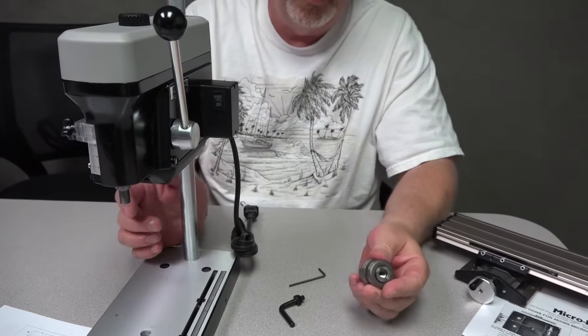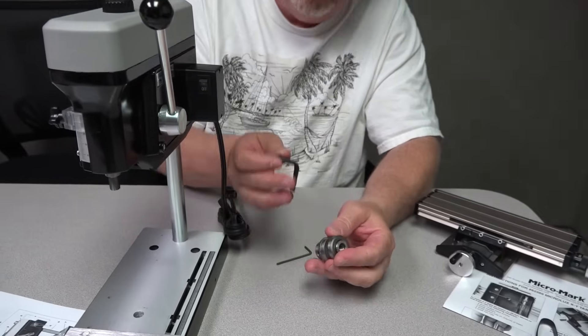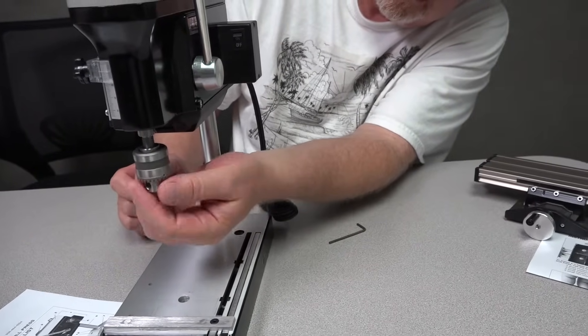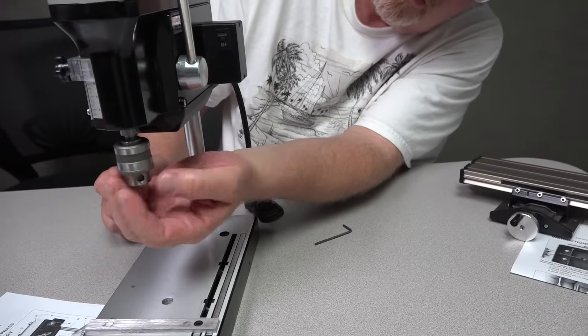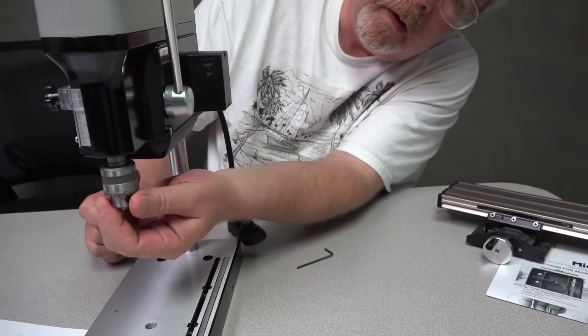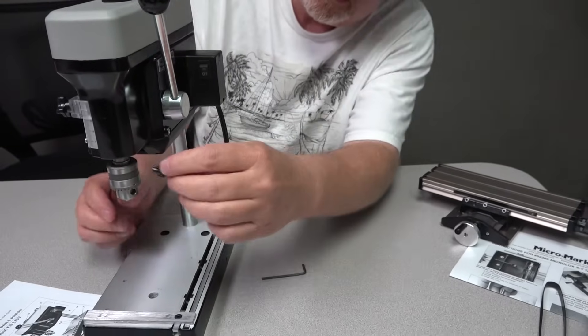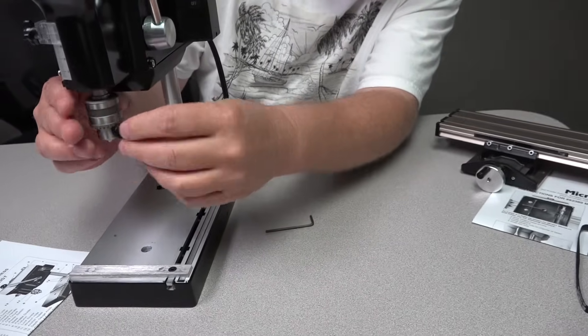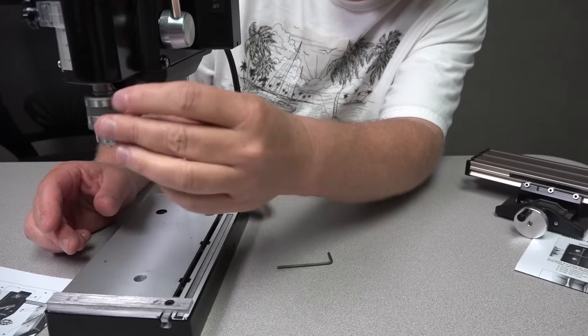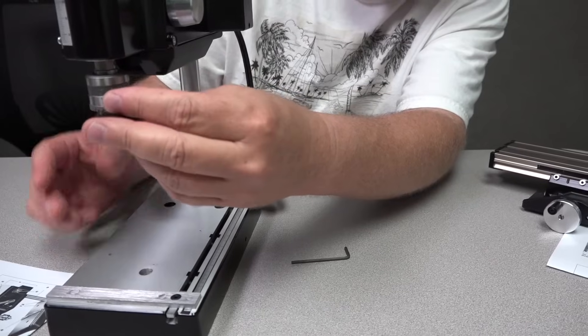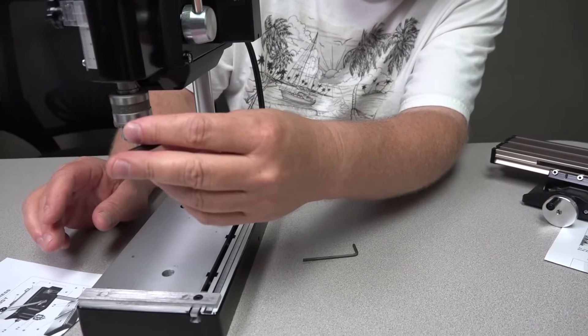It comes with a chuck and a key. The chuck simply threads on to the spindle and raise it all the way up and firmly put it on. It has the key in which you raise and lower the three-jaw chuck to clamp down onto your drill bits.